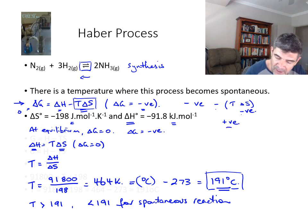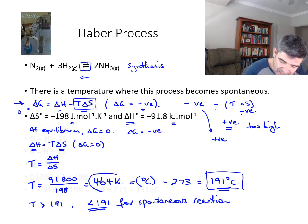if our value is too high in terms of its magnitude, then it's going to turn this negative value into a positive value. Therefore in order for us to make sure that we have something that is a spontaneous process, we actually need the temperature to be less than 191 degrees or less than 464 Kelvin. As long as the temperature is lower than this, then we have a spontaneous reaction.